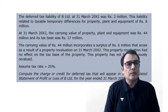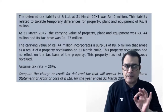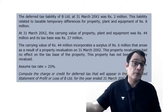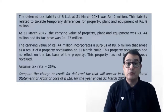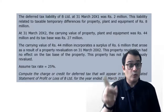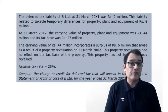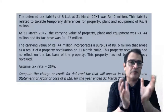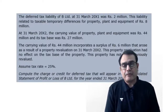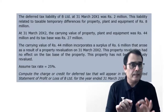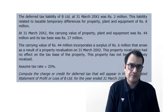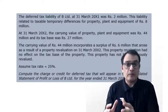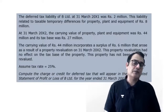In step five, we determine where to recognize the 2.25 million. Since 6 million of the temporary difference relates to revaluation, 6 million × 25% = 1.5 million DTL is attributed to the revaluation surplus. Because the revaluation surplus was recorded in OCI, the related deferred tax of 1.5 million also goes to OCI. The remaining 0.75 million is taken to the P&L as deferred tax expense. The total DTL on the balance sheet is 4.25 million: 2 million opening plus 2.25 million recorded in the current year.